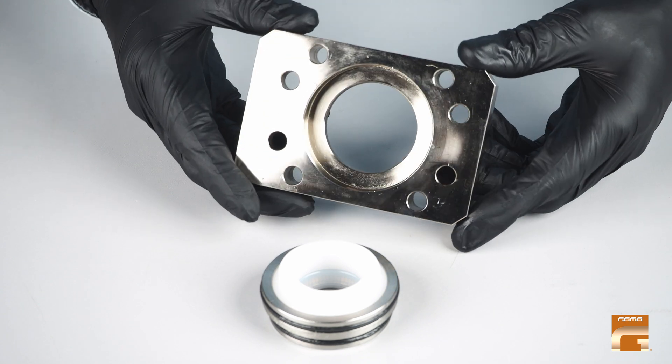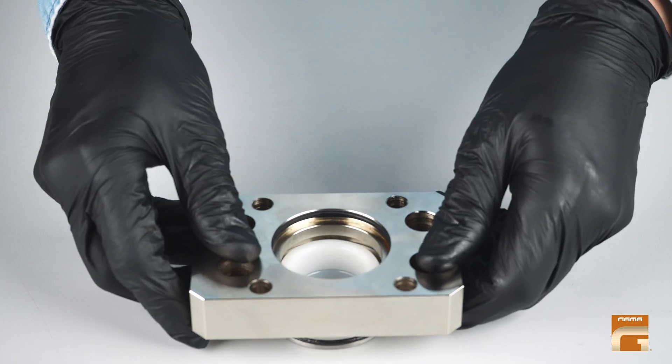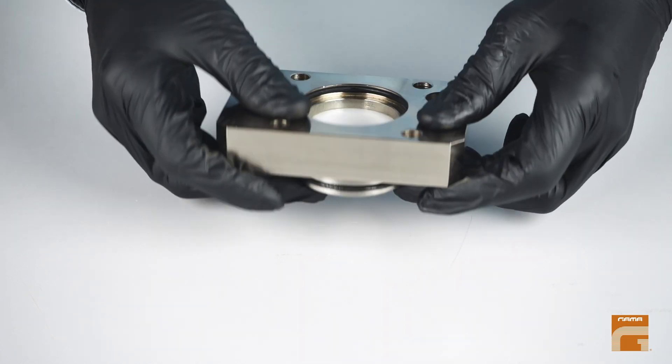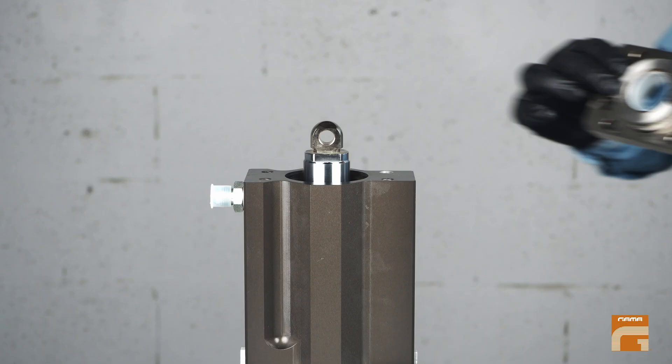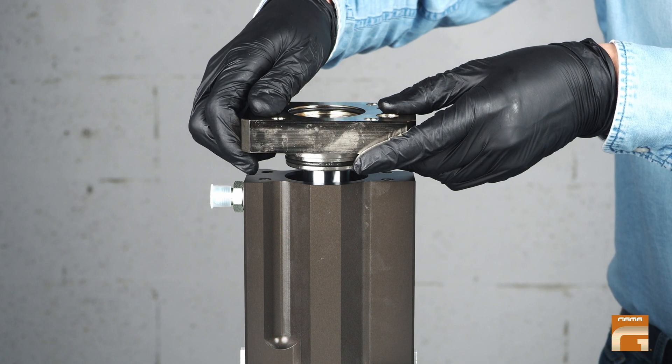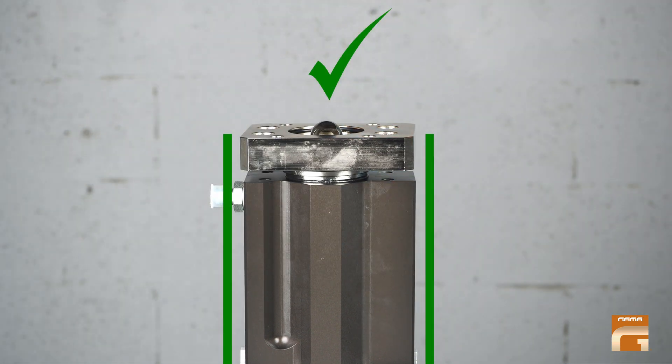Insert the whole assembly into the metal flange as shown in the video. Adapt it on the piston shaft as low as possible and make sure the flange is in the correct position.